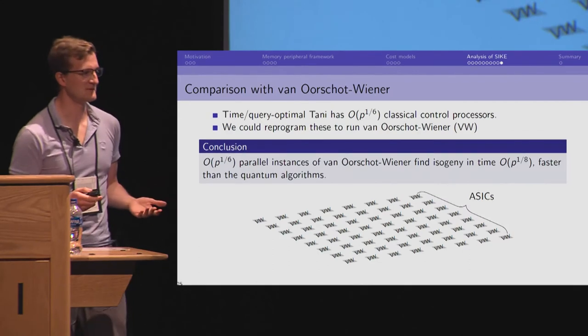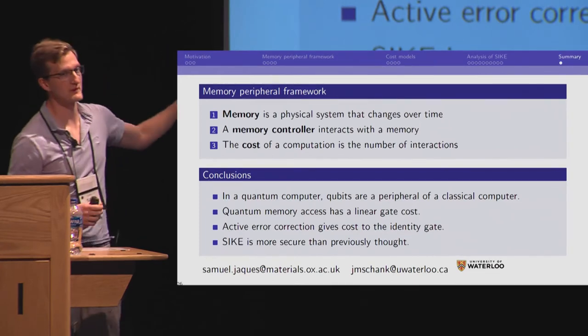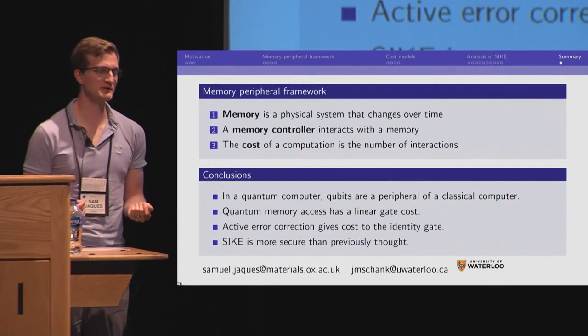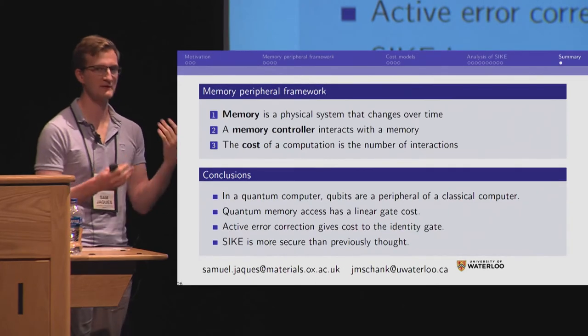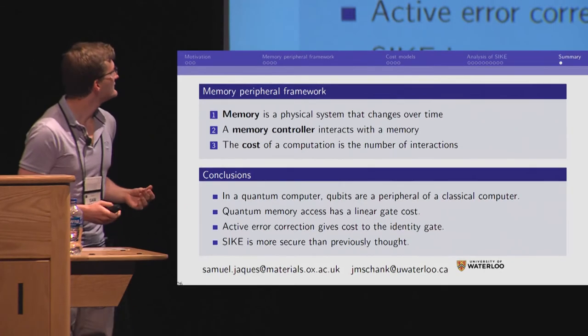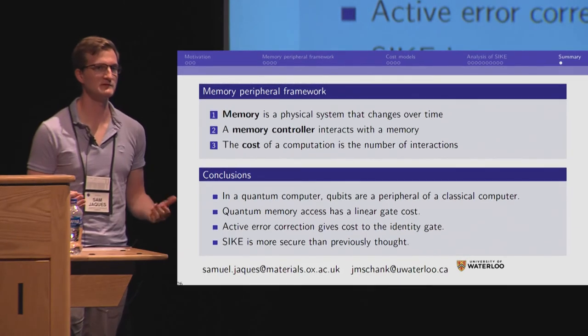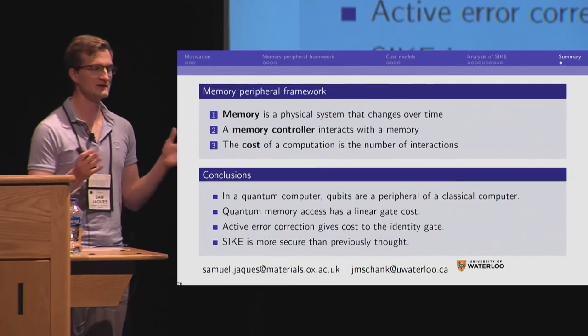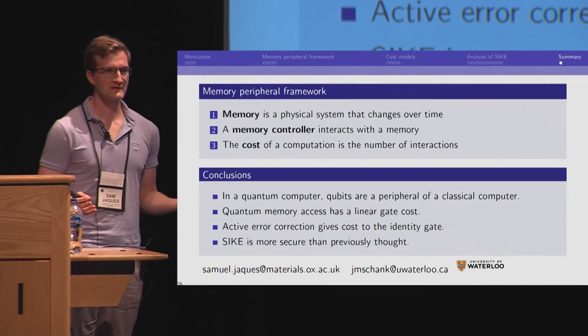And so, this is the big conclusion of our paper. But our main contribution here is this memory peripheral framework. What we want you to take away is thinking of quantum computers as peripherals to classical computers. And thinking that everything you do on the quantum computer was controlled by the classical computer, and you can think in terms of those classical costs, which are now directly comparable to any classical algorithm. And so, from this, you can give a linear gate cost to memory access for quantum algorithms. And even further, if you're skeptical about this passively-corrected memory, you can use this dw-cost and give a cost to the identity gate. That's everything. Thank you for listening.